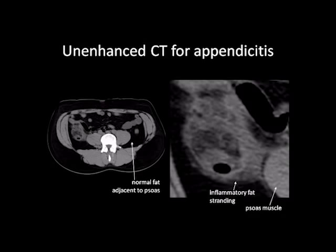As inflammation occurs, lymphatic vessels leak, increasing the water content of adipose tissue. As a consequence, the density increases and the tissue appears brighter on CT, even without the administration of any contrast agents.